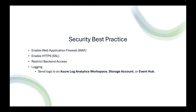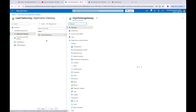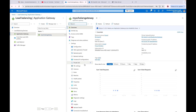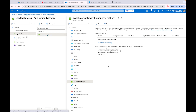To recap: in a previous video we talked about enabling web application firewalls; this video covered enabling HTTPS and restricting back-end access via network security groups. Now let's talk about how you send logs from your application gateway to an Azure Log Analytics workspace, storage account, or event hub. Back in our application gateway, this will be very simple.